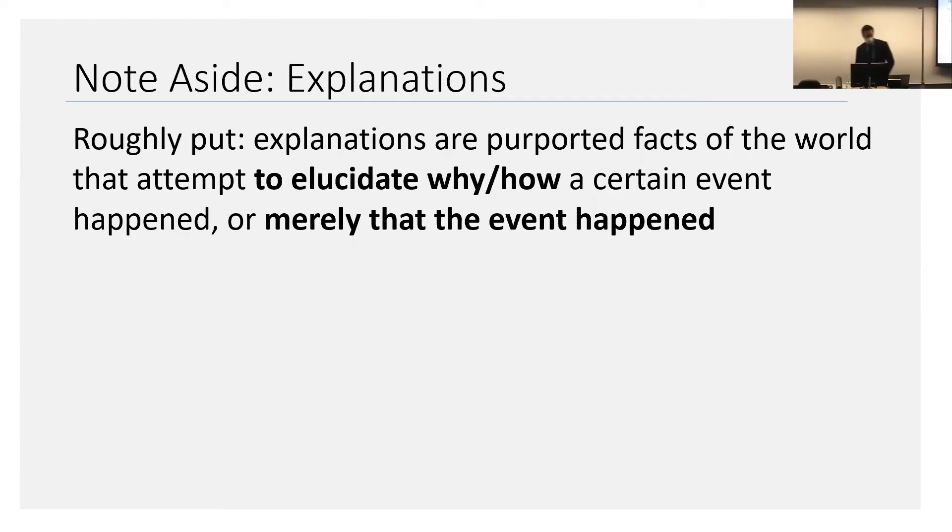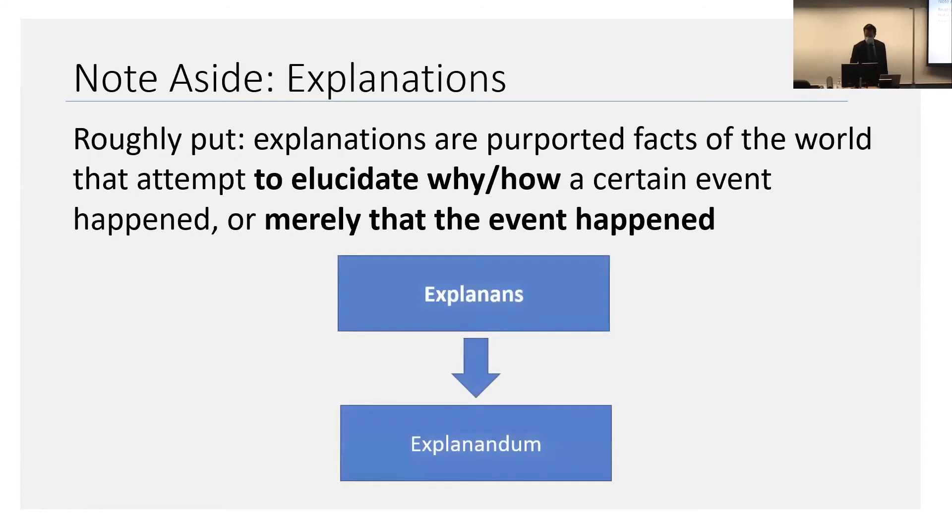So do you see the distinction between this bit and this bit? So the latter, you're not really given explanation that explains how or why something occurred, but you give an explanation that would say that the event occurred or increase the probability that the event occurred or something like that. In fact, there's a lot of philosophical debate on this kind of stuff.